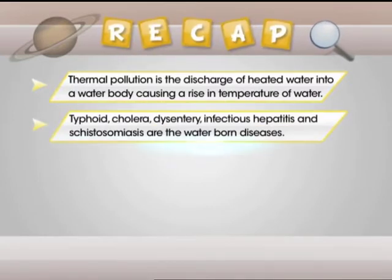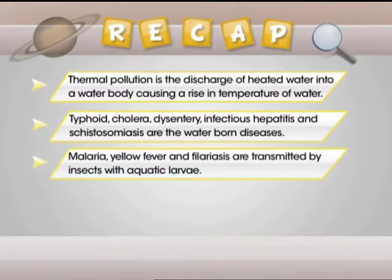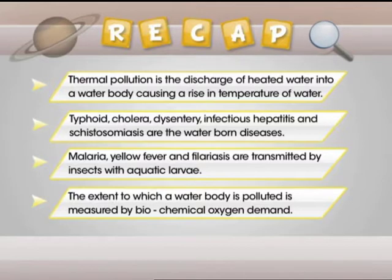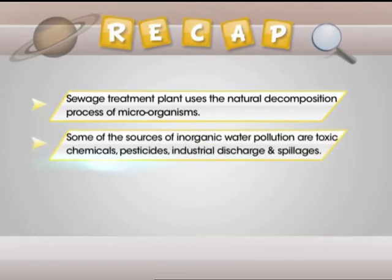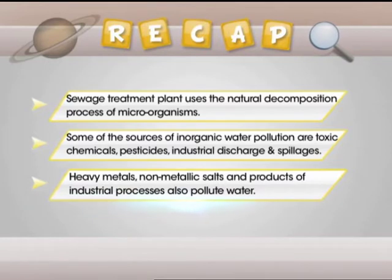Typhoid, cholera, dysentery, infectious hepatitis and schistosomiasis are the waterborne diseases. Malaria, yellow fever and filariasis are transmitted by insects with aquatic larvae. The extent to which a water body is polluted is measured by Biochemical Oxygen Demand. Sewage treatment plants use the natural decomposition process of microorganisms to reduce organic matter in sewage. Sources of inorganic water pollution include toxic chemicals, pesticides, industrial discharge and spillages, heavy metals, non-metallic salts and products of industrial processes.